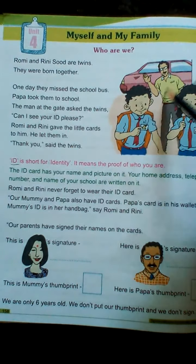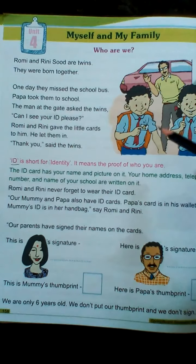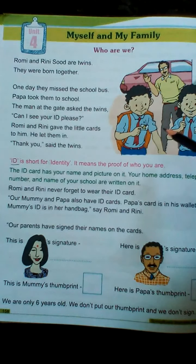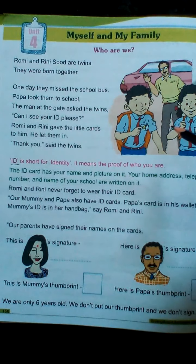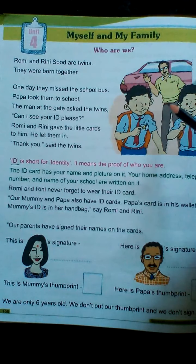Rini's papa took them to school. The man at the gate — the watchman — asked the twins, 'Can I see your ID, please?' Then Romy and Rini gave their little cards to him. He let them in, and 'Thank you,' said the twins.